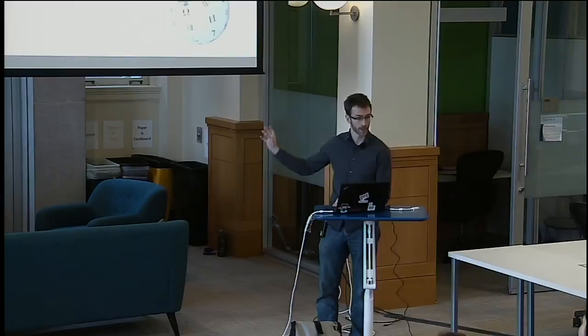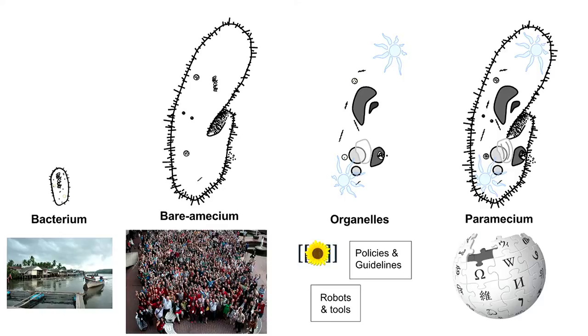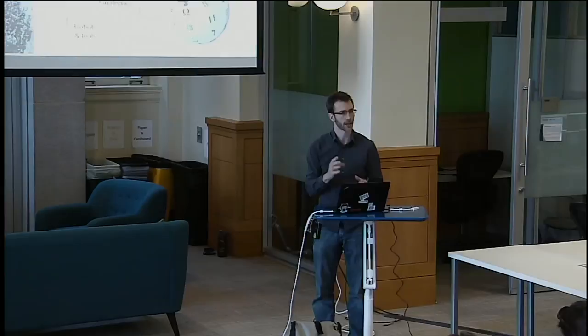Nothing wrong with the bacterium, nothing wrong with the fishing village, but they just don't get that big. Whereas Wikipedia is enormous — 110,000 people working on this site and it mostly works, almost entirely without very much coordination at all. When I talk about the integration of social and technical, I want to talk about the 'baramecium' — the paramecium without organelles. The organelles help solve critical sub-processes allowing it to operate at enormous scales. The baramecium of Wikipedia is the crowd of people working on this project together.